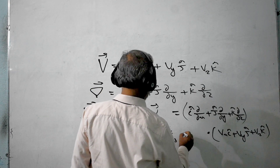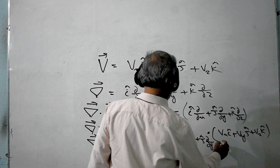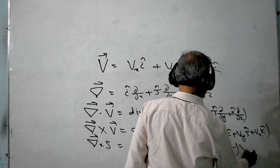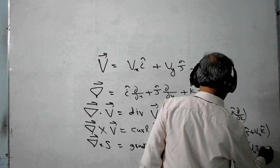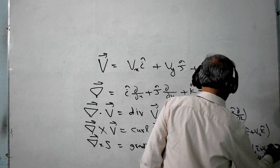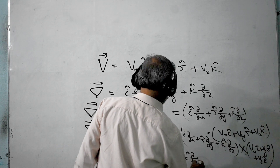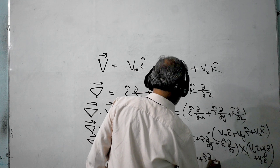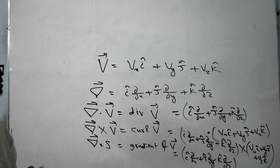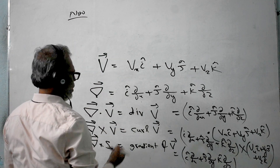For del cross V, we write: (i·∂/∂x + j·∂/∂y + k·∂/∂z) cross (Vx·i + Vy·j + Vz·k). And the gradient will be written as: i·(∂s/∂x) + j·(∂s/∂y) + k·(∂s/∂z).